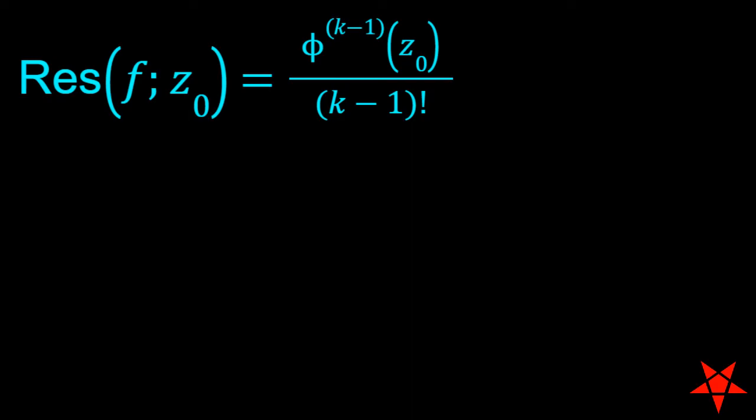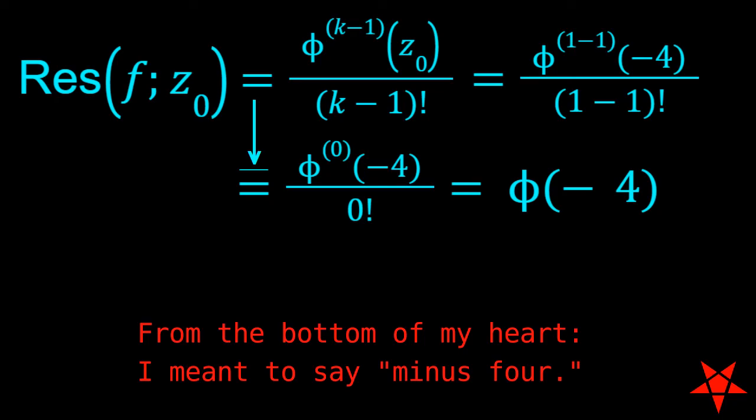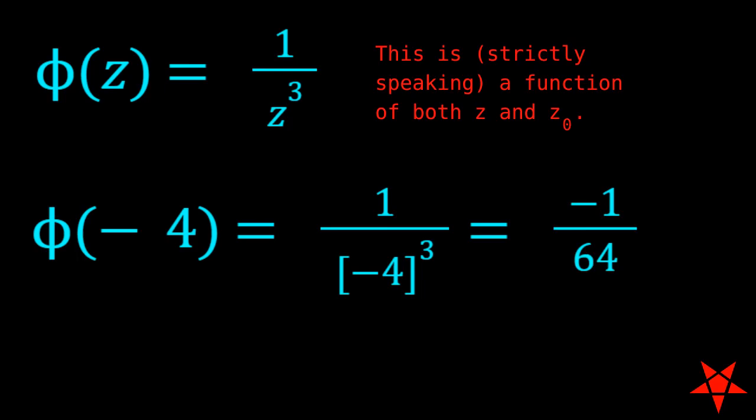then we see that we don't even need calculus in order to evaluate it. k minus 1 becomes 0, and we need only to evaluate phi of z naught at z naught equals negative 4. The z plus 4 terms cancel on top and bottom, and we are left with negative 1 over 64 for the residue. And I hope that Better Call Saul Season 6 lives up to the hype. Until next time, this is Pentagram Prime, signing off.